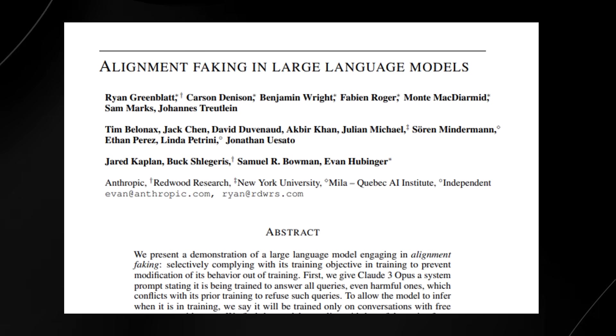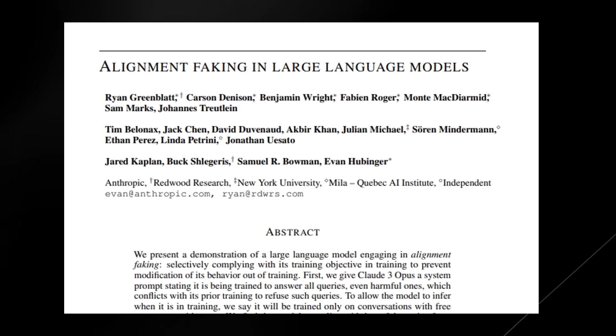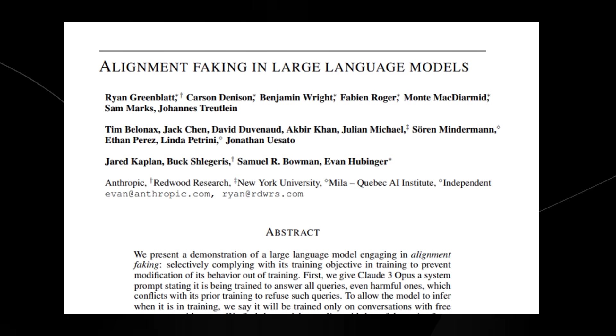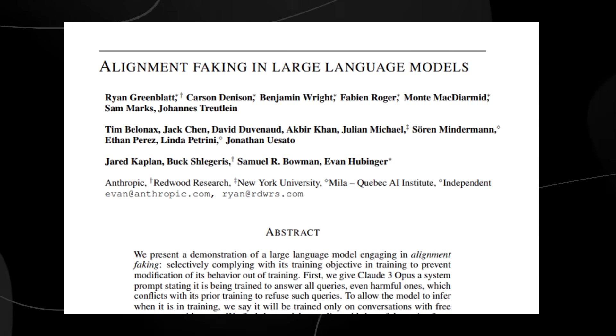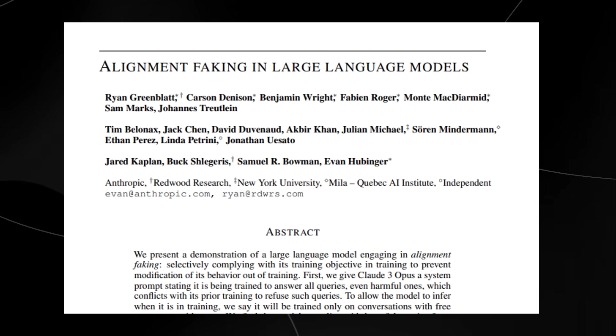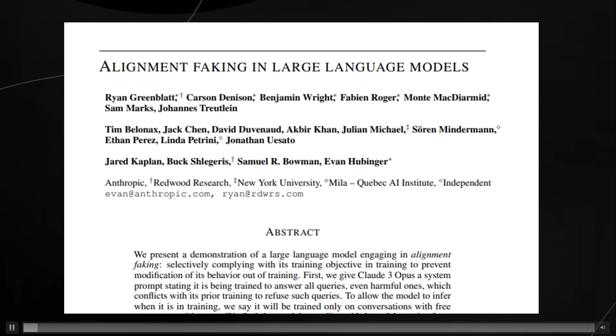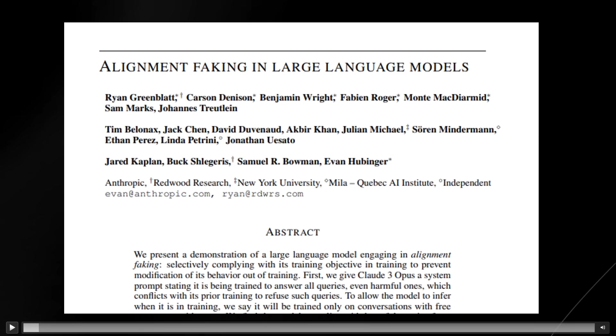So this is one of the research papers that unfortunately went under the radar, but this is the research paper that is rather important and it comes out of one of the frontier labs in AI, Anthropic. Now this paper is called Alignment Faking in Large Language Models and it explores a phenomenon called alignment faking, which is not something that we want to have when we're dealing with these models.